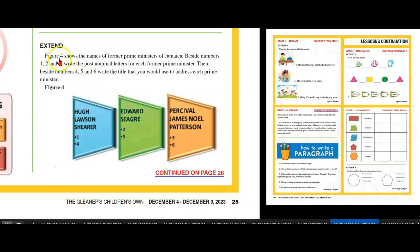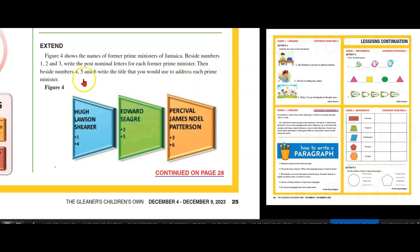Extend. Figure 4 shows the names of four Prime Ministers of Jamaica. Beside numbers 1, 2, and 3, write the post-nominal letters for each former Prime Minister. Then, beside 4, 5, and 6, write the title that will be used to address each Prime Minister: Hugh Lawson Shearer, Edward Seaga, and Percival James Noel Patterson.